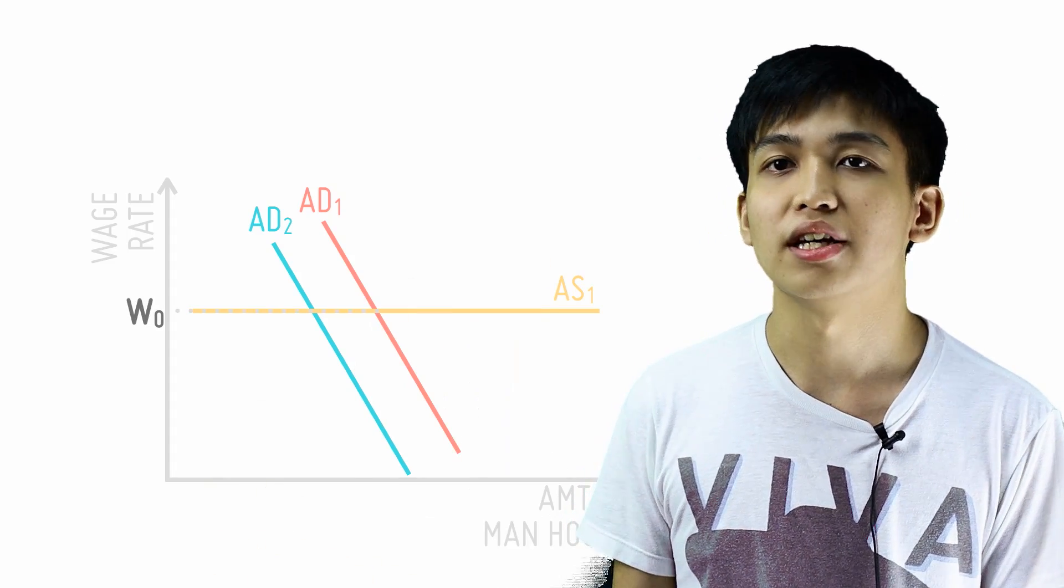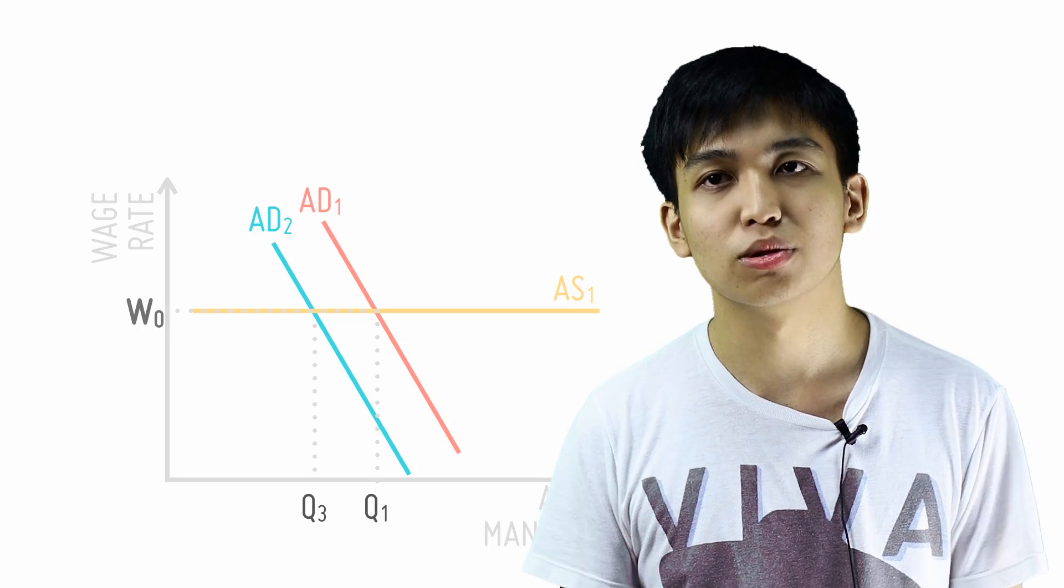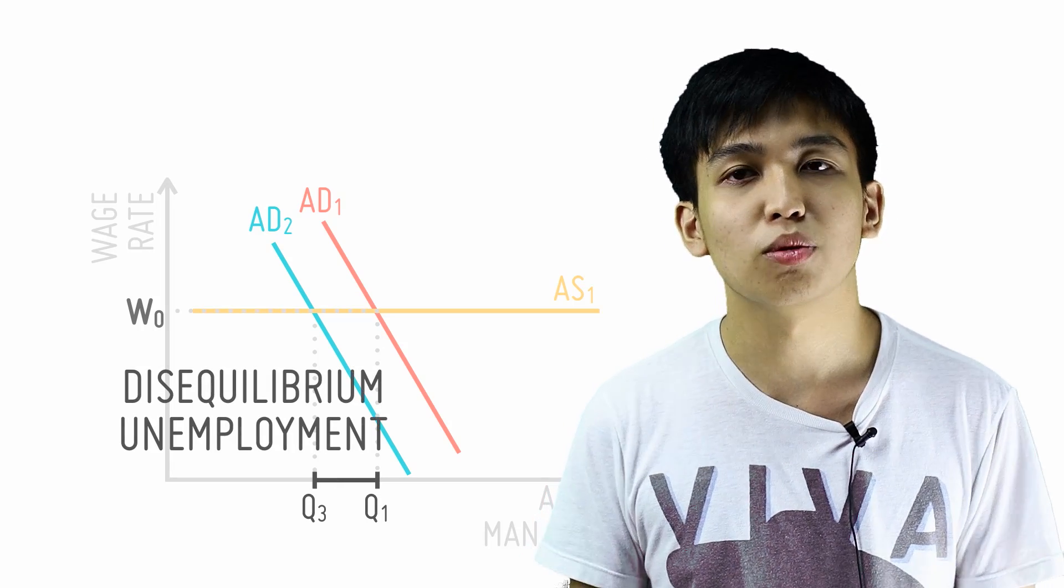Consider a labour market in which the initial wage is W0. If the demand for labour falls, but wages do not fall below W0, there will be a resultant disequilibrium unemployment of Q1 minus Q3.